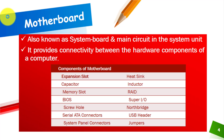The first component is the motherboard. The motherboard is also known as the system board and is the main circuit board in a system unit. It provides connectivity between the hardware components of a computer. So the function of the motherboard is to provide connectivity between all hardware components.